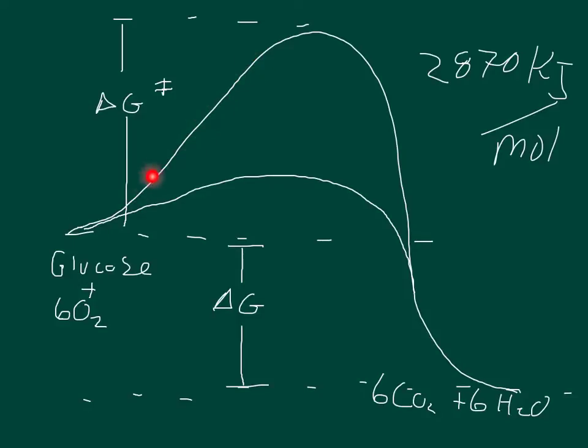So without an enzyme, there has to be quite a bit of energy added to glucose and oxygen to get it to where it will spontaneously form CO2 and H2O. With an enzyme, however, that energy that needs to be added is substantially less. The energy added is called the delta G, the change of free energy for the transition state.